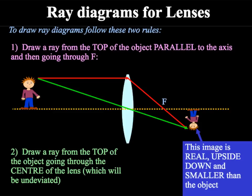In the example here the image is real in that it can be projected onto a screen as it is focused on the right hand side of the lens. It is upside down and it is much smaller than the original object. The distance that the object is away from the lens will affect the position, size and orientation of the image.